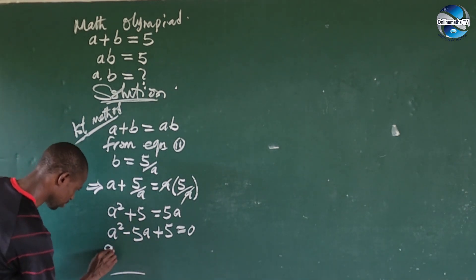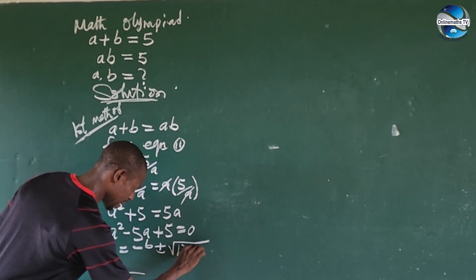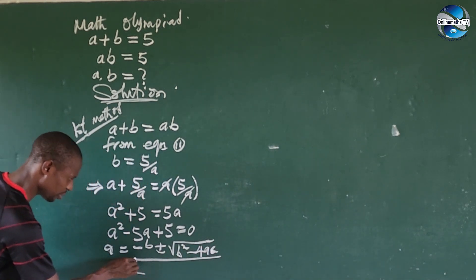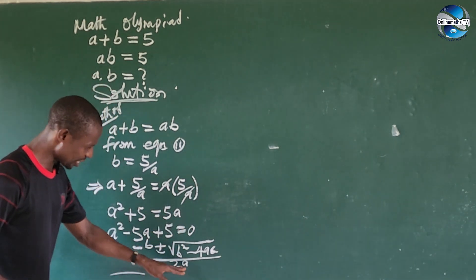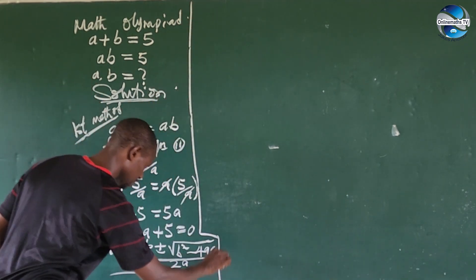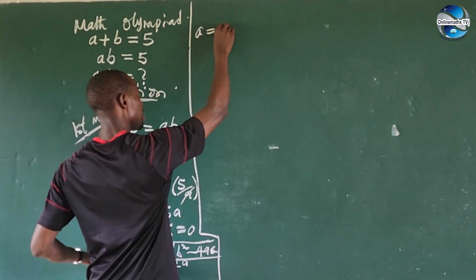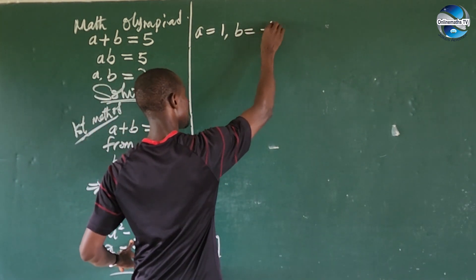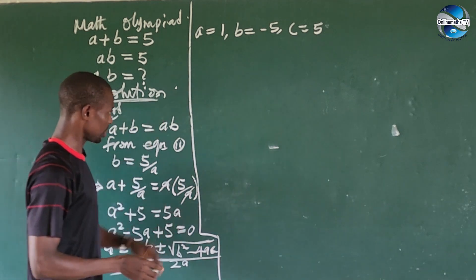Since we cannot factorize this, we use the quadratic formula: a equals minus b plus or minus the square root of b squared minus four ac, all over two a. We identify the coefficients from a squared minus five a plus five equals zero: the coefficient of a squared is one, so a equals one; the coefficient of a is minus five, so b equals minus five; and the constant term c equals five.